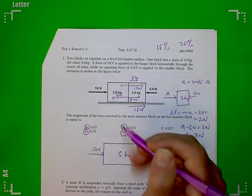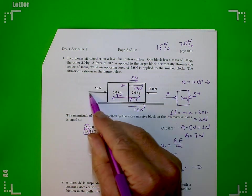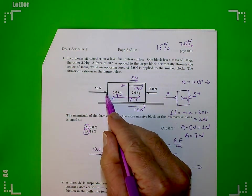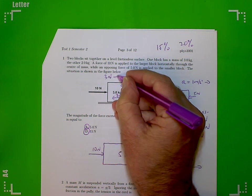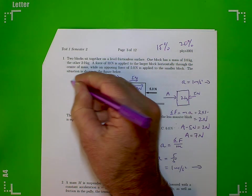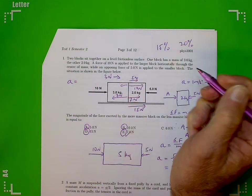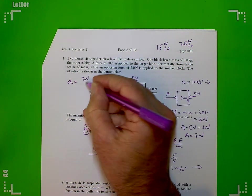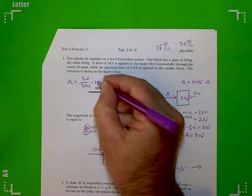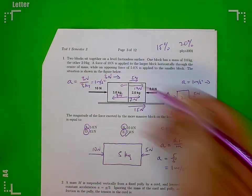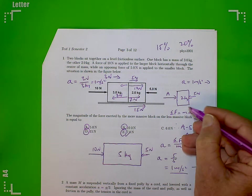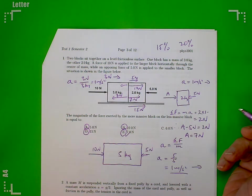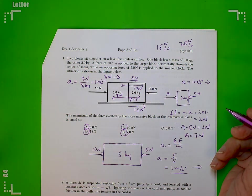Now what's the net force on the 3 kilogram block? Well, the net force on the 3 kilogram block is 10 newtons take 7 newtons, which is just 3 newtons to the right. So what's the acceleration of the 3 kilogram block? It's 3 newtons divided by 3 kilograms, which is 1 meter per second squared, which is exactly the same as the acceleration of both blocks and of the 2 kilogram block. So everything is consistent.